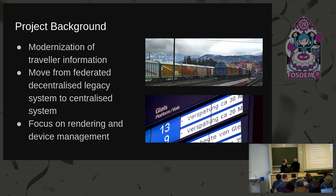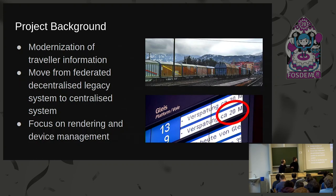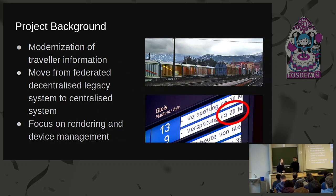We're working for an international train company — not about cargo, but about travel information, like the displays you might have seen. You've probably experienced delays: five minutes on the display, five minutes later it's ten minutes, then fifteen. The reason is the federated decentralized system of servers serving all these displays. If a train hasn't arrived in the visible area of a server, the operator doesn't know when it will arrive, so he just types five minutes and keeps increasing it.